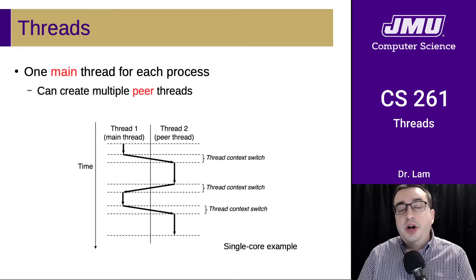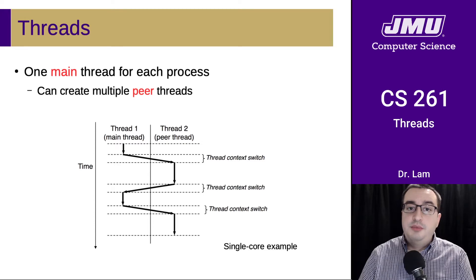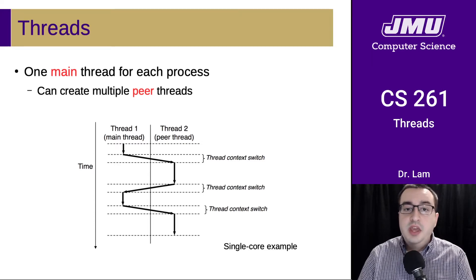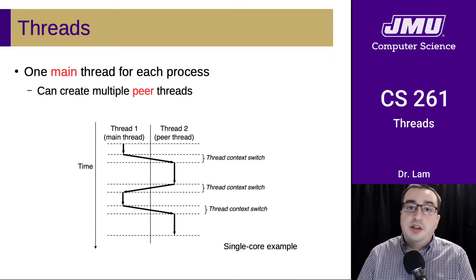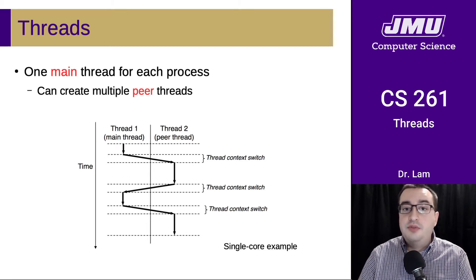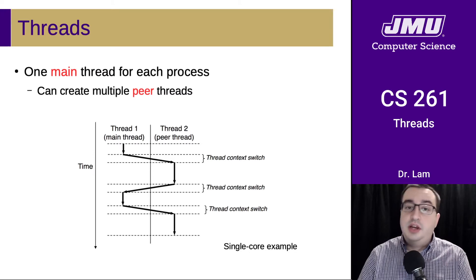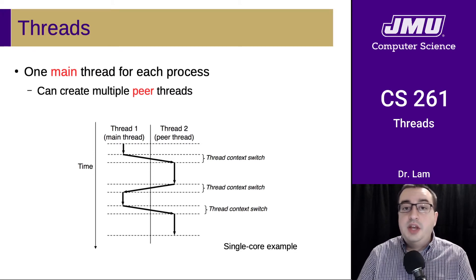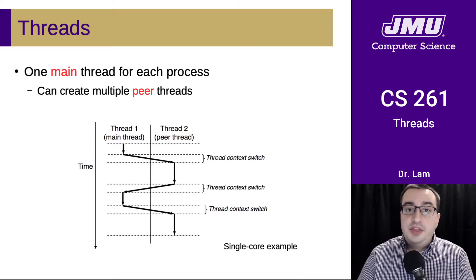There is one main thread for every process — the thread that begins when the process starts executing. The main thread can create multiple peer threads. If we're running on a single core, we'll switch back and forth between threads using a thread context switch, which is lighter weight and cheaper than a process context switch. And obviously, if we have more than one core, we can run more than one thread at the same time on different cores.